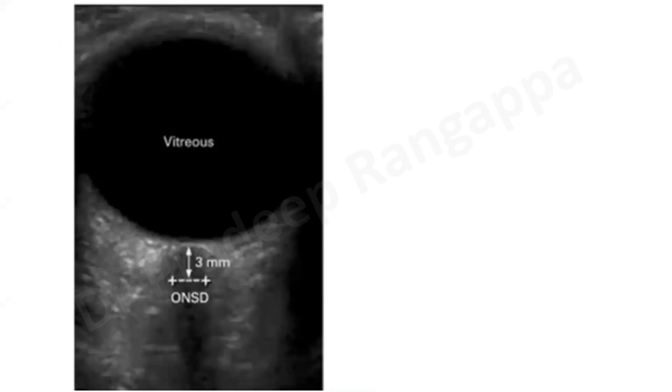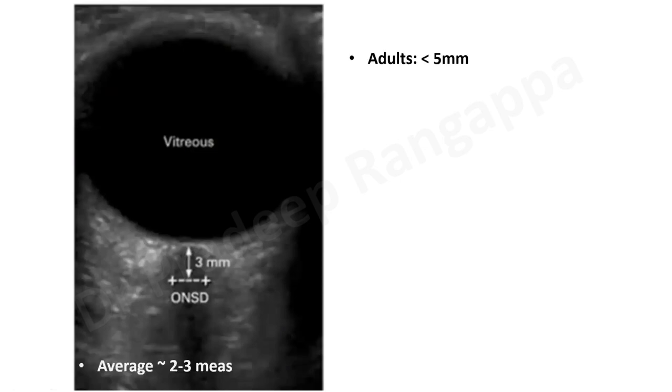The key aspect for all trainees to remember is two numbers: three millimeters and five millimeters. When you put the ultrasound probe, you'll see the vitreous humor. You place the calipers and measure three millimeters from the optic disc, then take the transverse diameter at that point. You are measuring the transverse diameter three millimeters distal to the optic disc — that gives you the reflection of ICP.